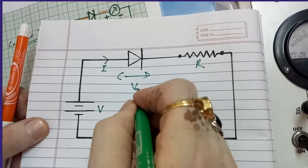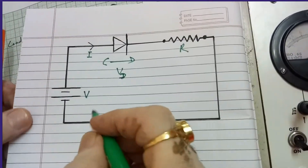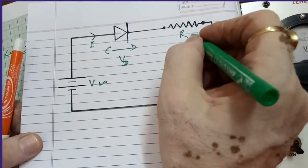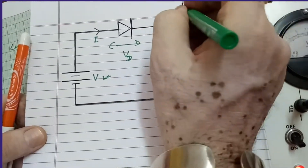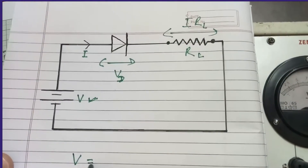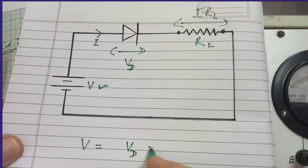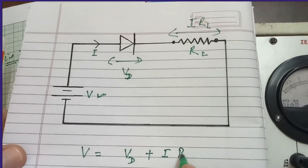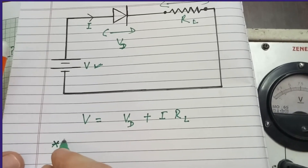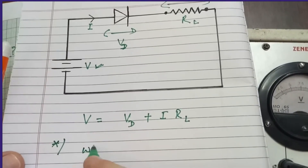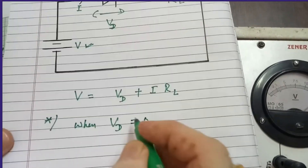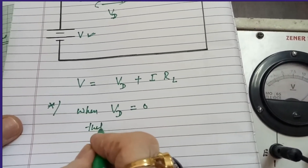The voltage across the diode is Vd; V is the voltage of the battery. The current passing through Rl gives a voltage drop of I times Rl. Applying Kirchhoff's voltage law: V equals the diode voltage Vd plus I times Rl.